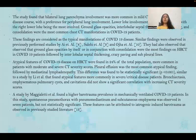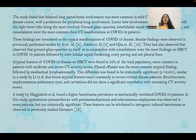Atypical features of COVID-19 on HRCT were found in 24% of the total population, more common in patients with moderate and severe severity scores. Pleural effusion was the most common atypical finding, followed by mediastinal lymphadenopathy — a statistically significant difference, similar to a study by Lee et al. Bronchiectasis, emphysematous pulmonary cysts, and cavitations did not show significant correlation with increasing CT severity scores. Spontaneous pneumothorax with pneumomediastinum and subcutaneous emphysema were observed in seven patients, attributable to iatrogenic barotrauma.